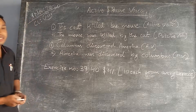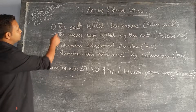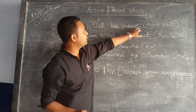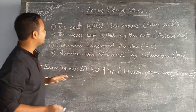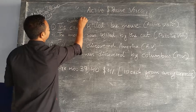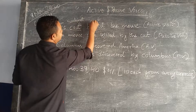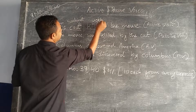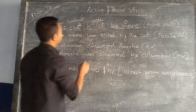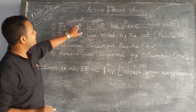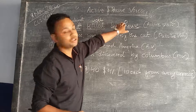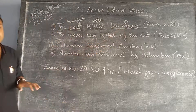Let's see the examples first. The first example is: 'The cat killed the mouse' — and this is an active voice. The cat is the subject, 'killed' is the verb, and 'the mouse' is the object in this sentence.